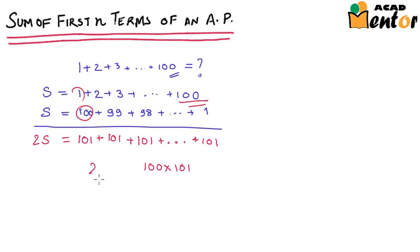So we have 2S equals 100 times 101, and hence S would be equal to 100 into 101 upon 2 or 5050. Now you can apply this technique to find the sum of the first n terms of any AP.